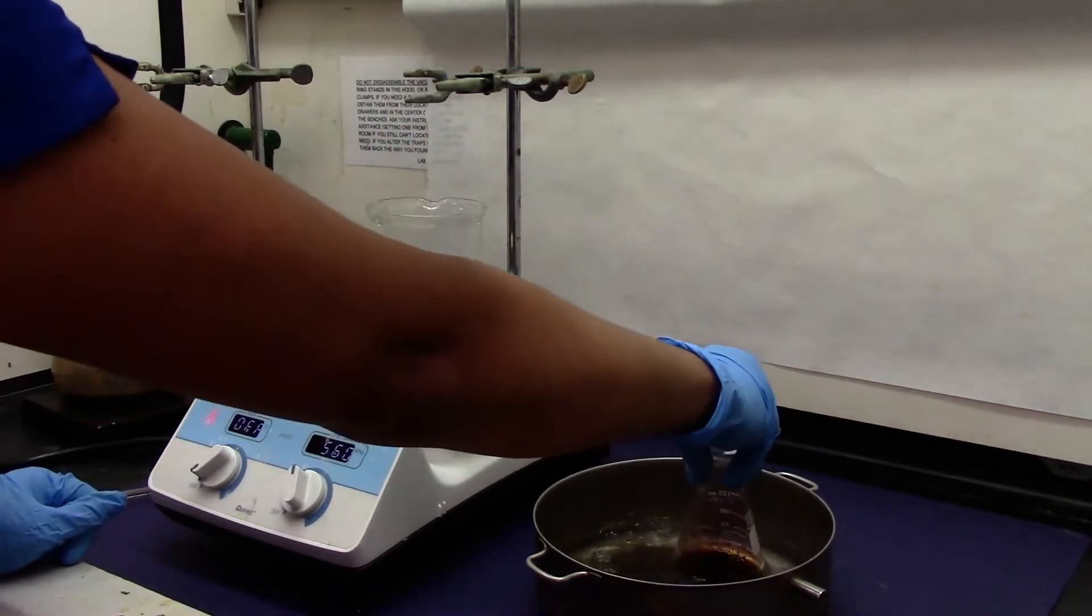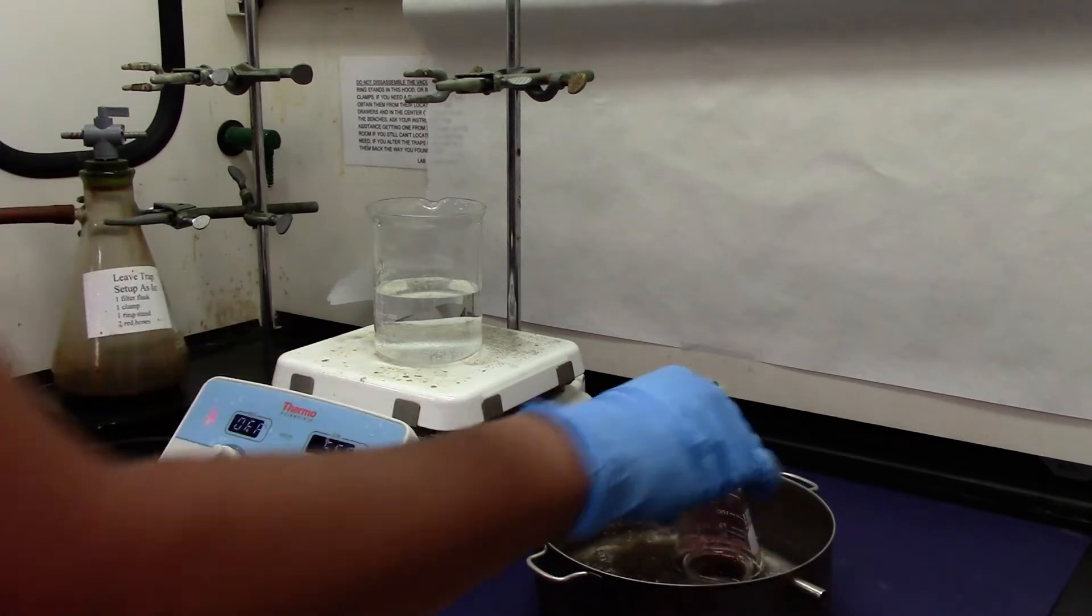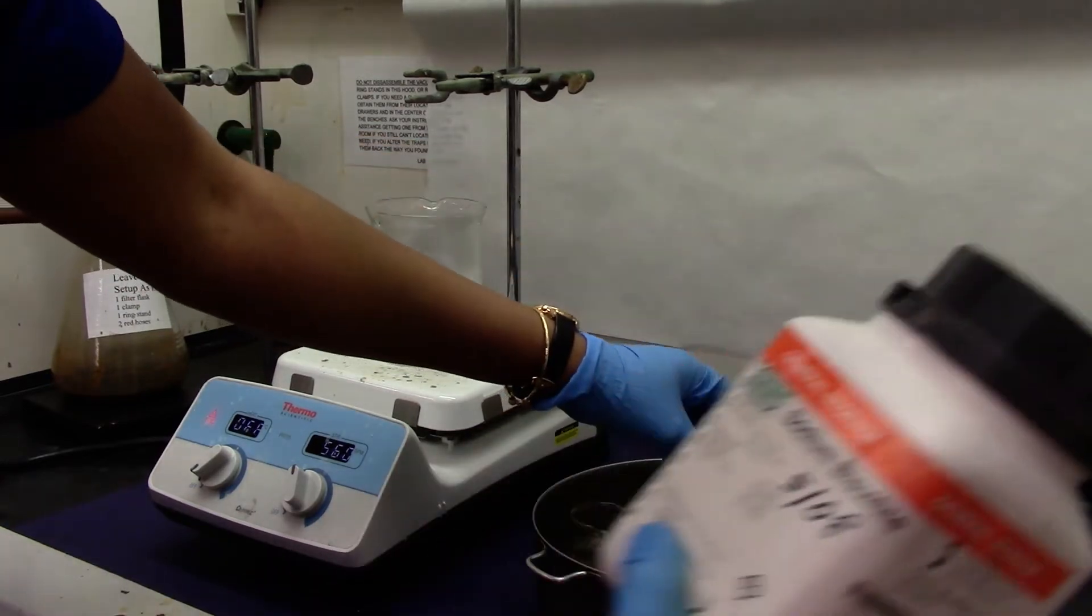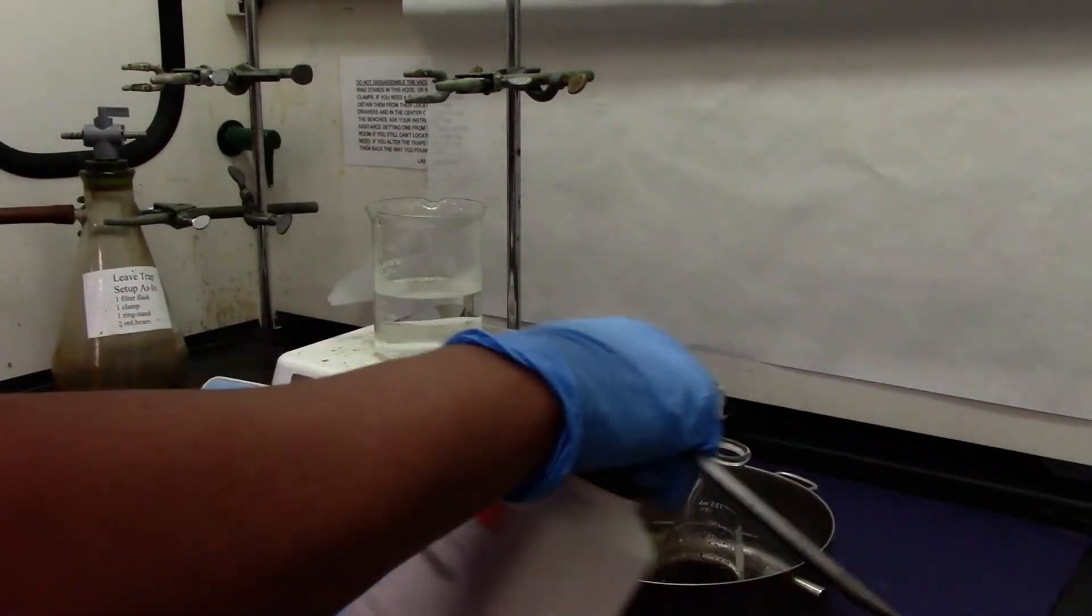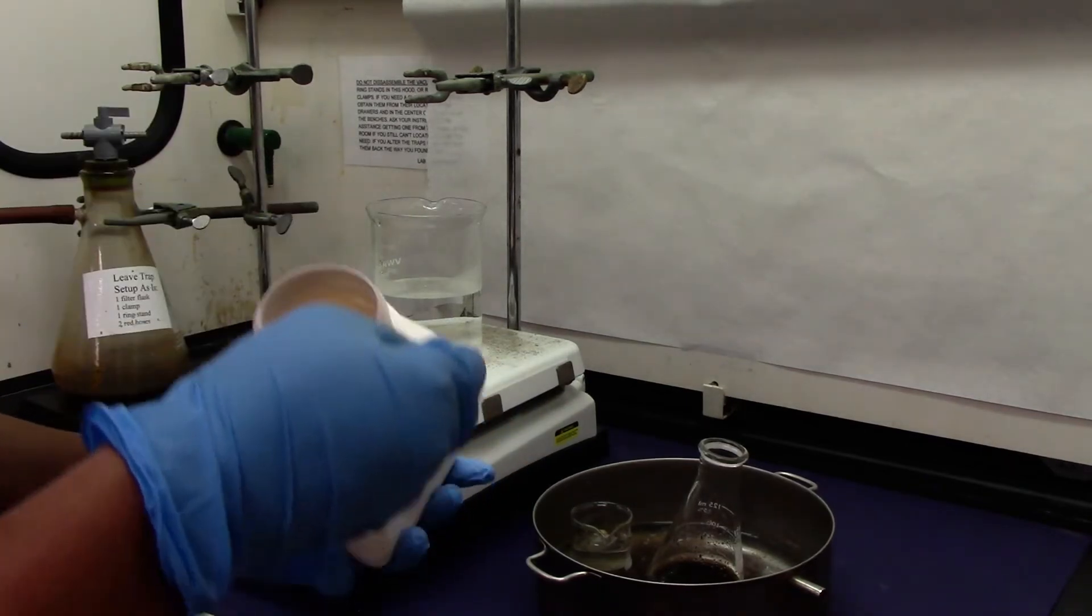We will place it in the ice bath. We will also put some DI water to cool down for the filtration. To this cold solution I'm going to add a pinch of sodium bisulfite to decolorize the iodine.